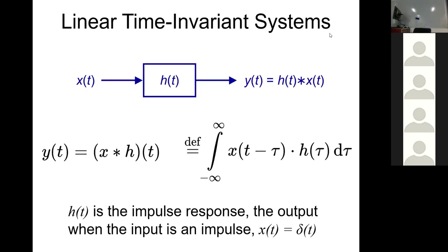Jumping in: if you've done any signal processing theory, the top plot here might look familiar. That box is a component in a system represented by h(t), known as its impulse response function — the response of the system when the input x(t) is a delta function or impulse. The output y(t) is just the impulse response function convolved with the input. Musically, think of the impulse as striking a drum skin; the reverberations are the impulse response. If you played sound through that drum skin instead, the effect it has is given by that convolution.